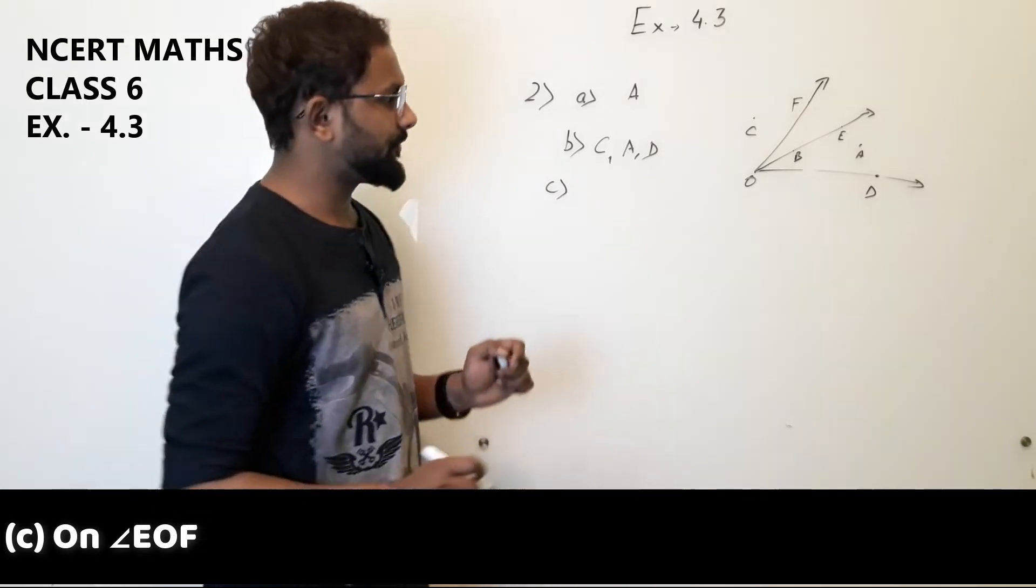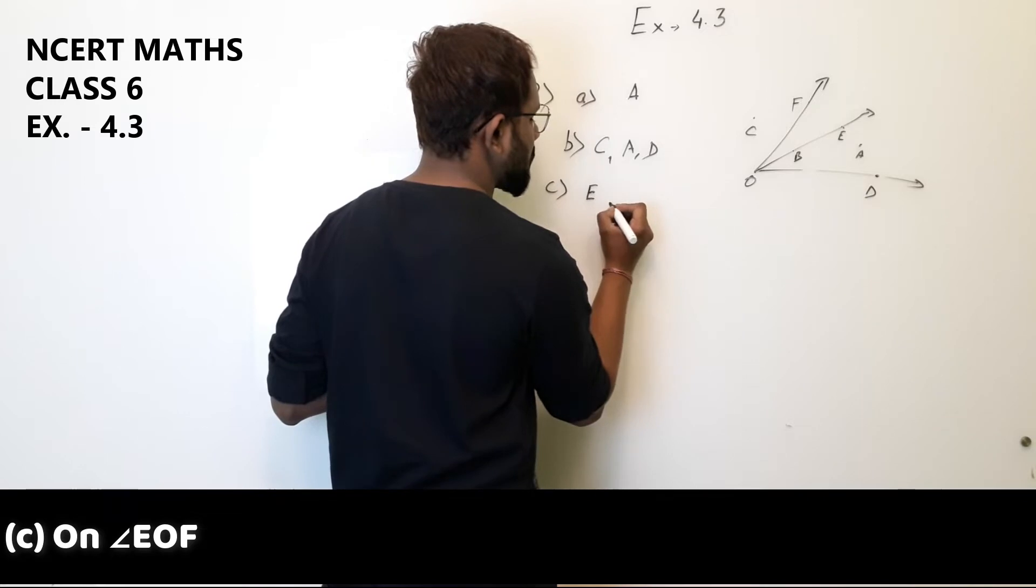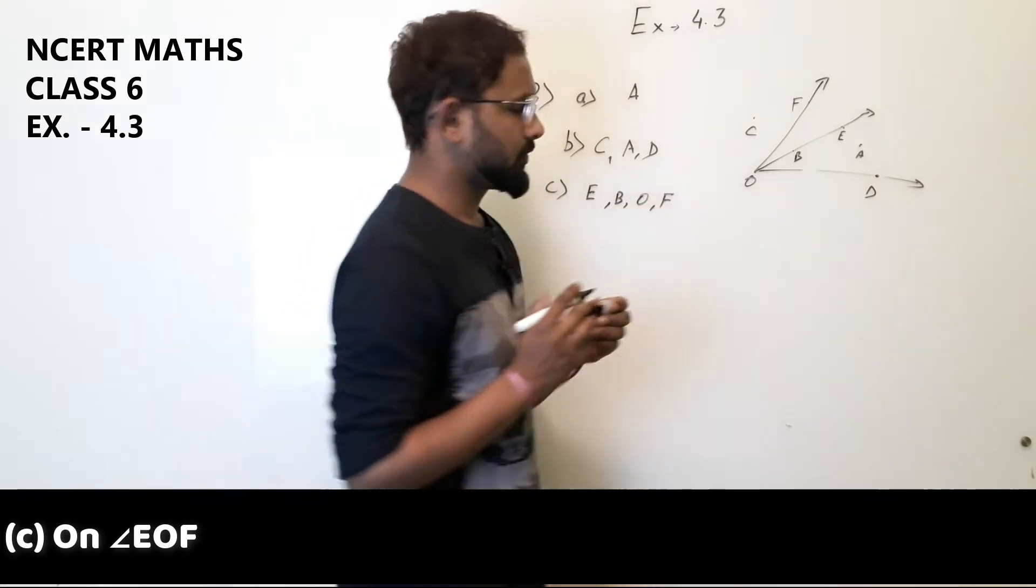And part C, on EOF. On EOF, the points will be E, B, O, and F. So this will be the answer of this question.